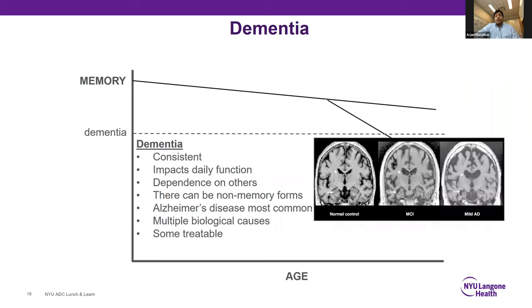When it comes to dementia — the stage after MCI — it's a consistent problem with dependence on others. It really impacts daily function, first with household management and occupation, and later with basic activities of daily living like personal hygiene and feeding. There can be non-memory forms of dementia, not all driven by Alzheimer's disease, and in very rare cases there may be treatable forms. On MRI, you'd see more shrinkage of the hippocampus and possibly other parts of the brain, like the frontal or parietal lobe.